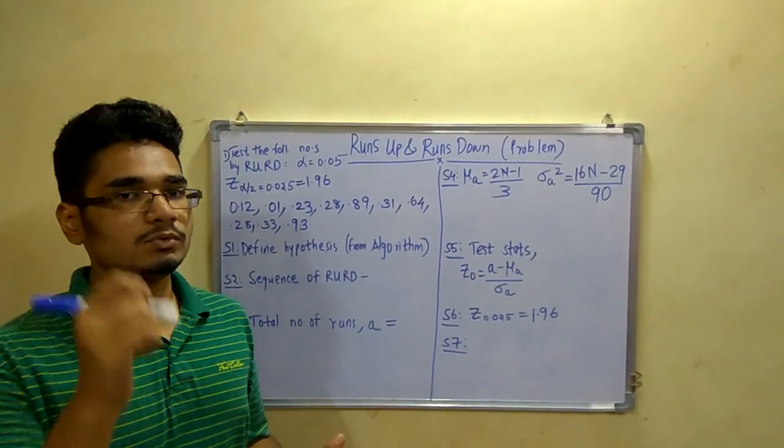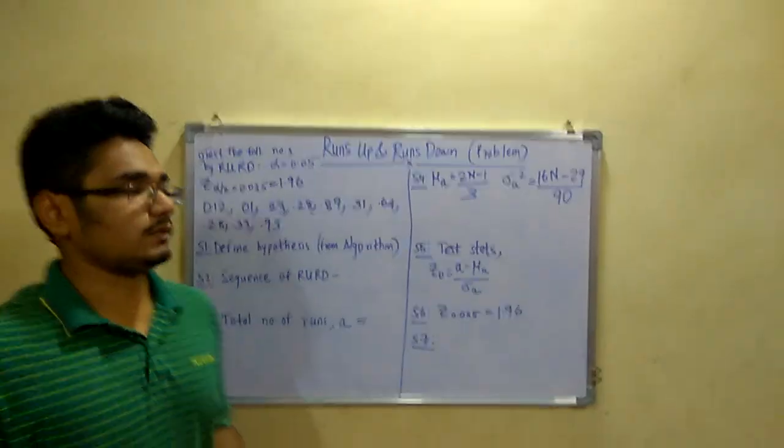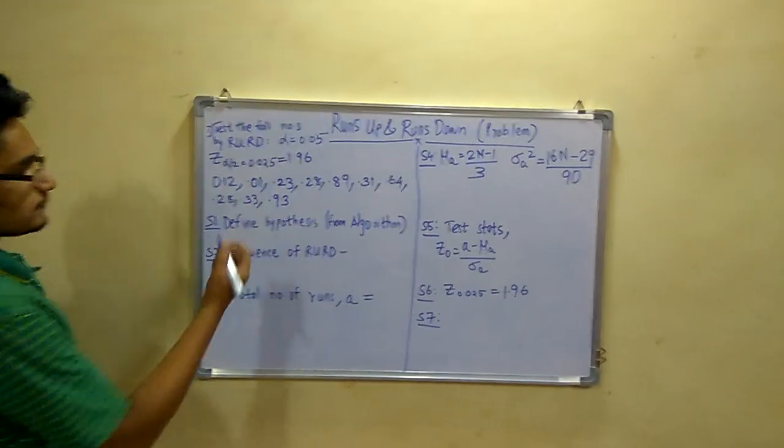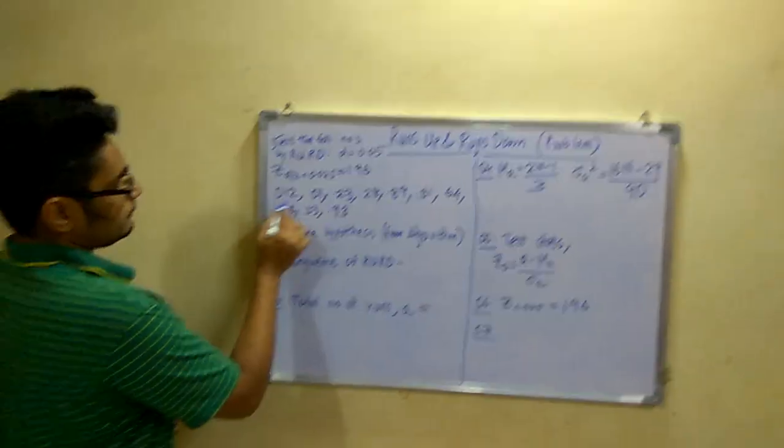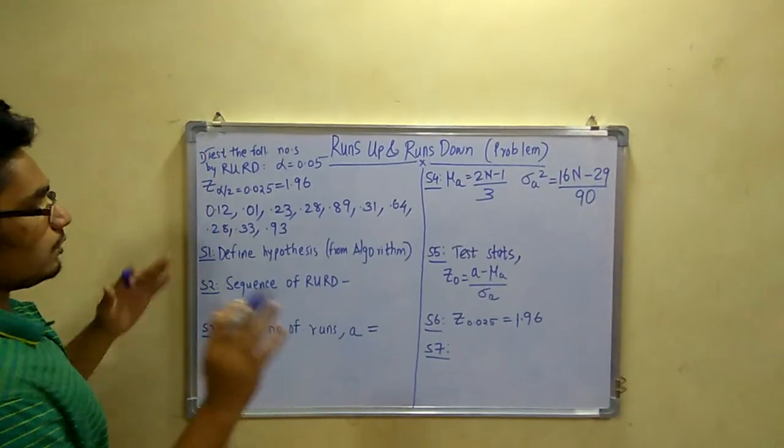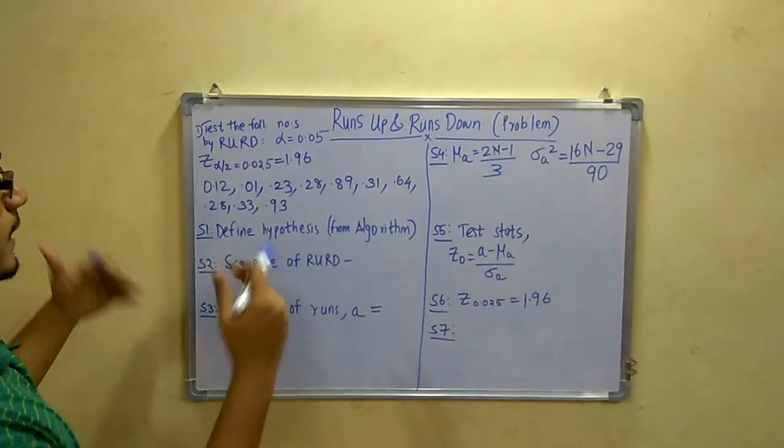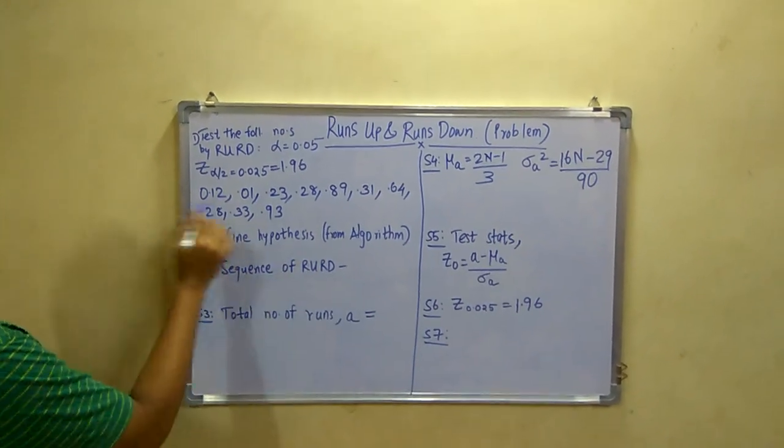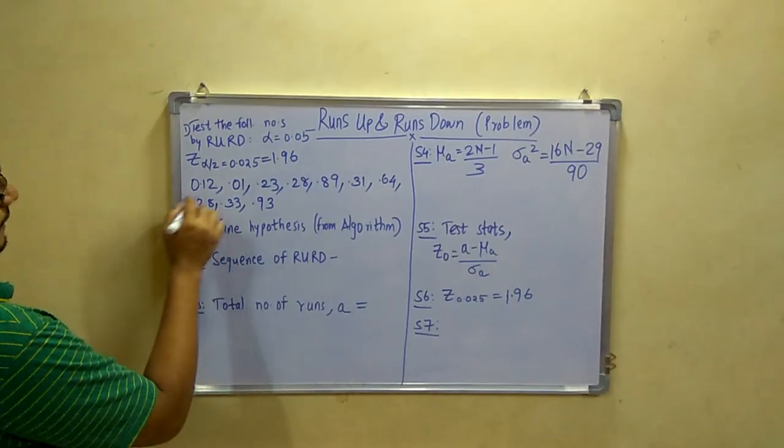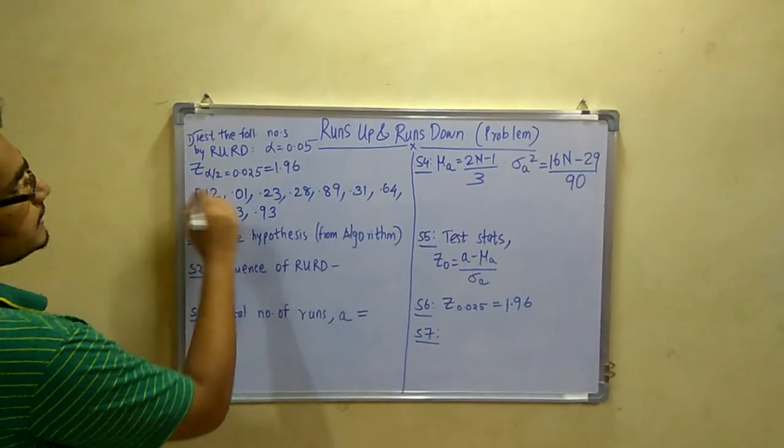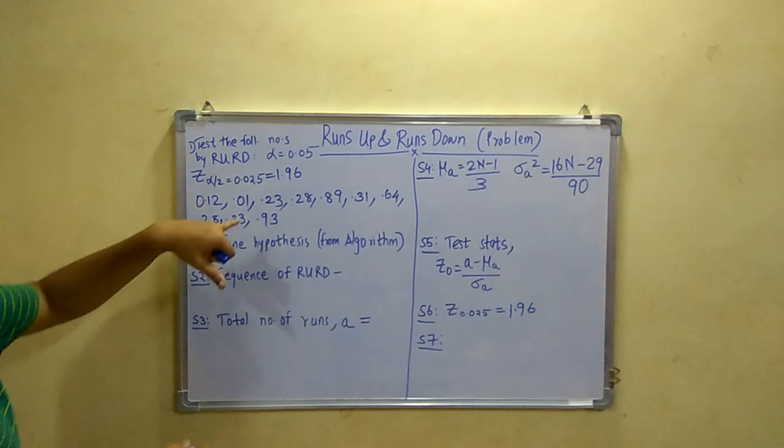Today I will teach you how to write those plus minus sequences. First you have to take the first number, that is 0.12. You don't have to arrange these numbers, let the numbers be in the same way they have given. First you choose the first number, 0.12, and see which number is after that. That is 0.01.